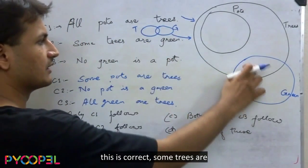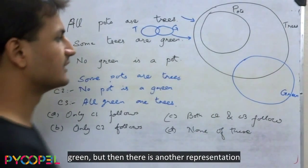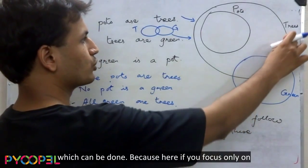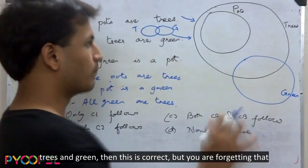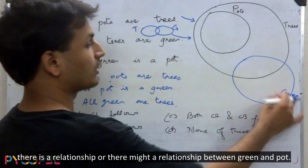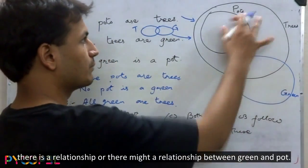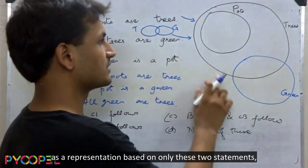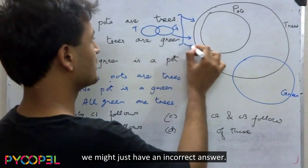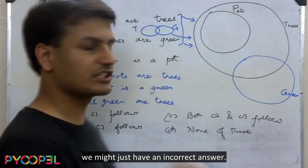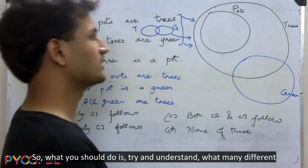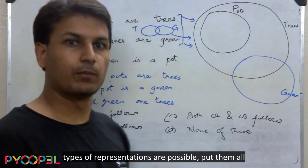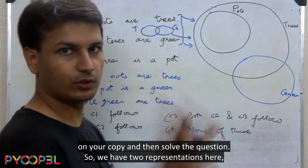Statement two: 'Some trees are green.' When I say some trees are green, there are different ways to represent this. One way is to have the green circle partially overlapping the trees circle. But you must also consider what relationship might exist between green and pots. So if we draw a representation based on only two statements, we might get an incorrect answer. You should try and understand all the different types of representations that are possible, put them all down, and then solve the question.